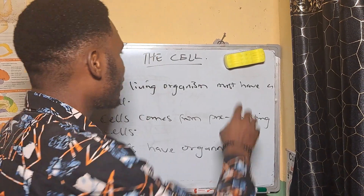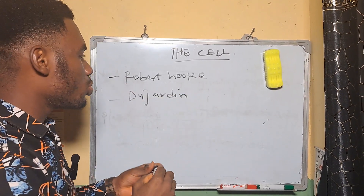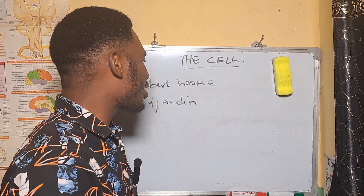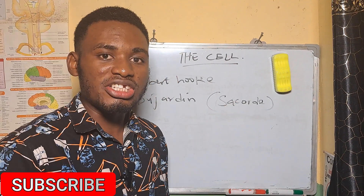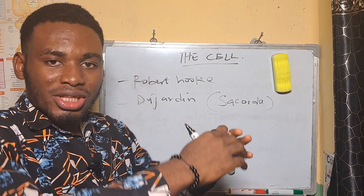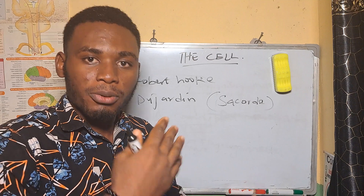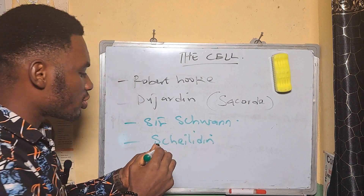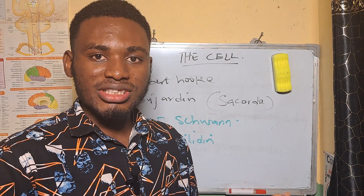Other scientists who made great contributions to cytology include Dujardin, who analyzed the cell and said the content of the cell is called a sarcoid. Later, Purkinje called that content the protoplasm. We also have Schwann and Schleiden. These scientists made a great impact in the study of cells — what we call cytology.